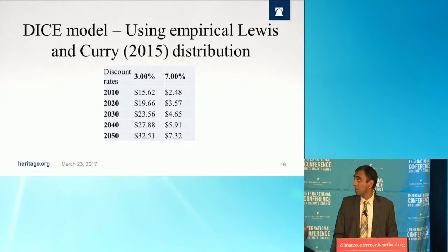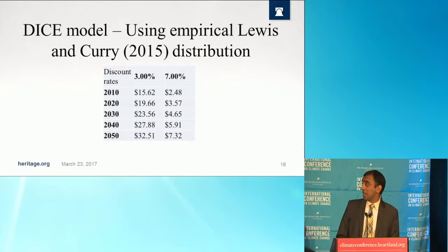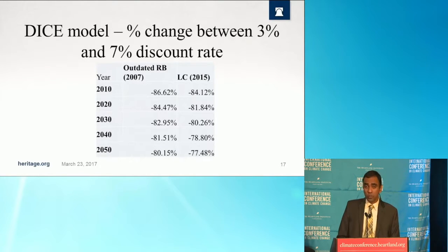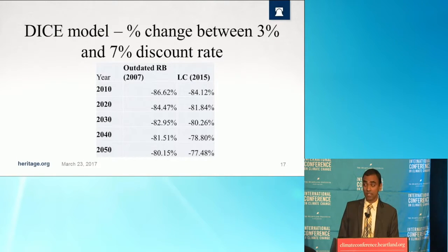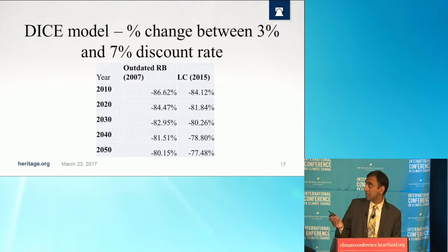What happens if we use the more up-to-date Lewis and Curry distribution that suggests a lower probability of high-end global warming? Even under a 3% discount rate, we notice a $19.66 estimate of the SCC. Under a 7% discount rate, we notice a $3.57 estimate. Holding the ECS distribution fixed, the SCC drops by 35 to 45 percent — or even more — when using 7% instead of 3%. And if we keep the discount rate fixed and switch ECS distributions, results change by about 40 to 50 percent in 2020 and 2050.